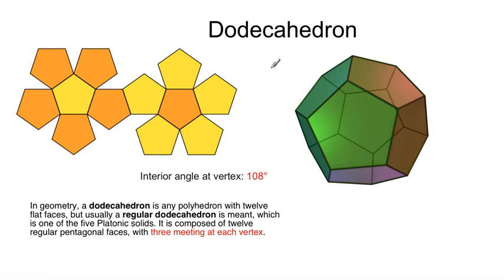A dodecahedron. Well, I'll try that again several times after I stop recording. In the meantime, I hope you had a laugh over that one. In geometry, the dodecahedron is a polyhedron with 12 flat faces. But usually, the regular dodecahedron is meant, which is one of the five Platonic solids, composed of 12 regular pentagonal faces.